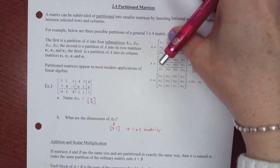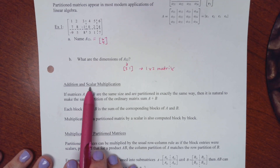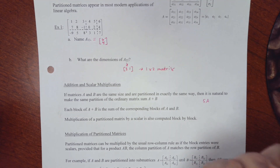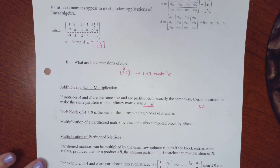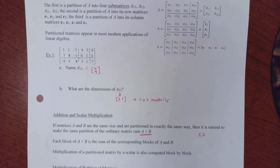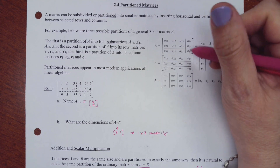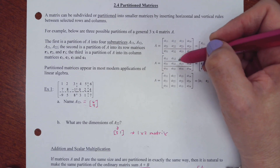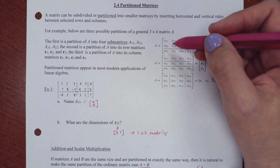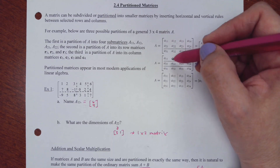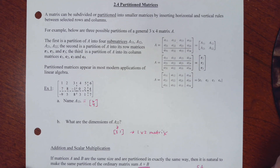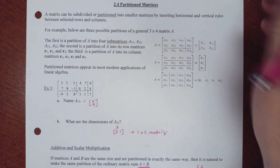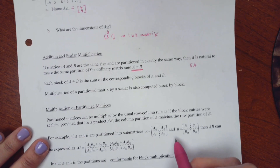When you have partitioned matrices and multiply by a scalar, all numbers in the matrix get multiplied by that scalar — so five times A just multiplies everything by five. For addition, the sizes have to work out: you cannot add a three by four matrix and another three by four that is not arranged the same way. If you have a two by three block, there must be a matching two by three block to add to it, and the partition structure must be identical.